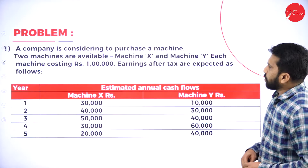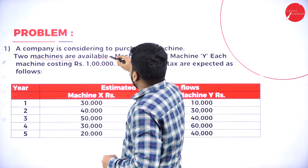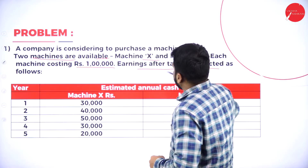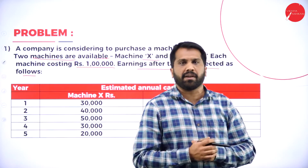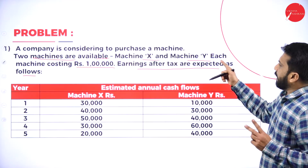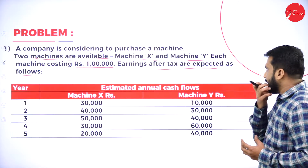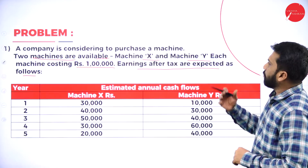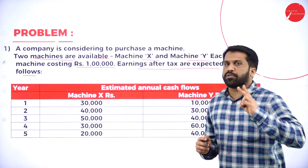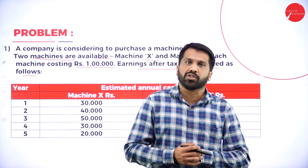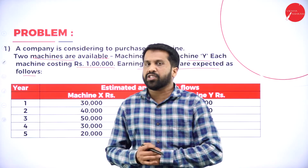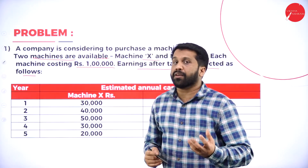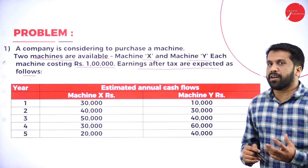A company is considering to purchase a machine. Two machines are available: Machine X and Machine Y, each machine costing Rs. 1 lakh. Earnings after tax are expected as follows. We have two options — should I go for Machine X or should I go for Machine Y? Both cost 1 lakh. Cost may be equal, but what about returns? If you go for Machine X, what will be your return? If you go for Machine Y, what will be your return?